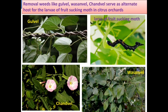Weeds such as good whale, wasan whale, and sand whale act as alternate hosts for larvae of the fruit-sucking moth, which is a major pest of citrus and pomegranate orchards. Removal and destruction of these weeds helps reduce pest infestation in the orchard.